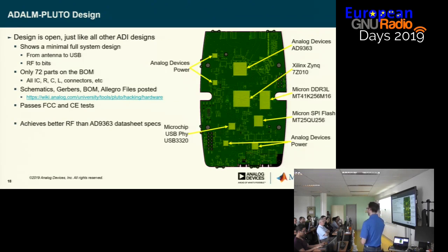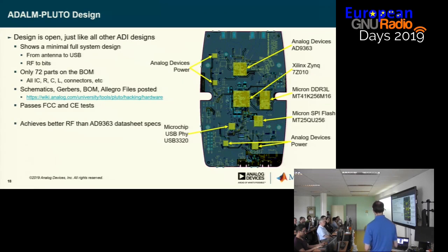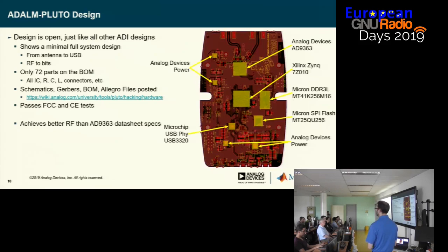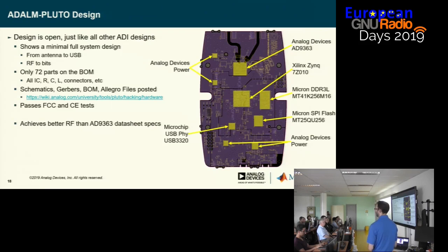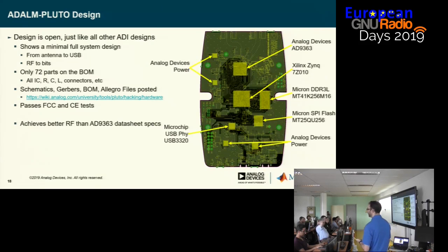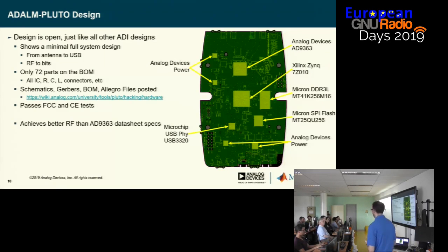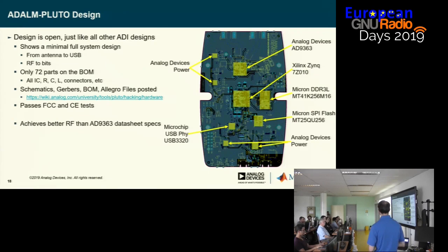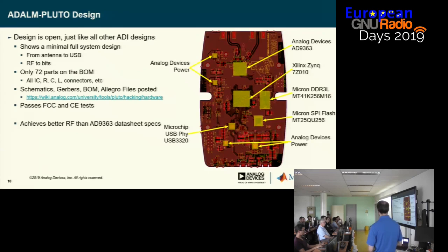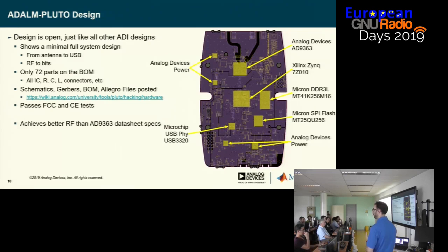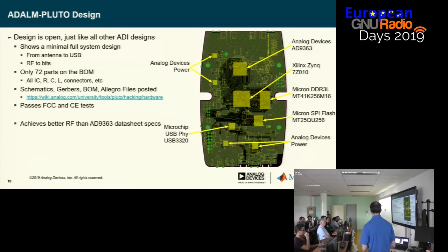ADI has traditionally been known for super high-end devices, converters, and analog components. But Pluto is a representation of a simplified design that you can build on your own — the BOM has only 72 line items, including all the way down to resistors and capacitors. It's a very compact design, and we provide schematics, Gerbers, and Allegro files online. If you want to build your own board off of Pluto, you're completely free to do that and we welcome it.